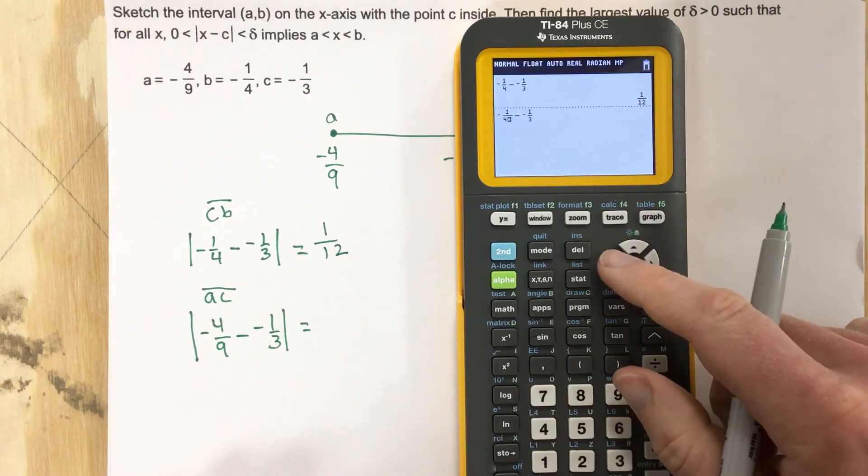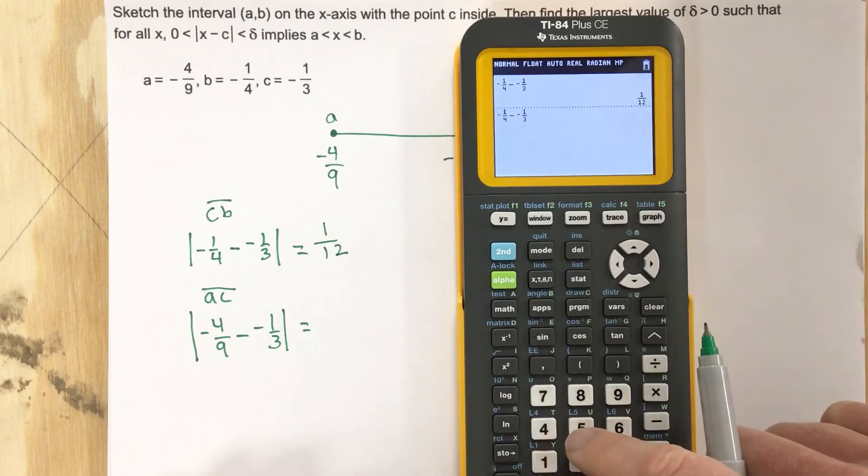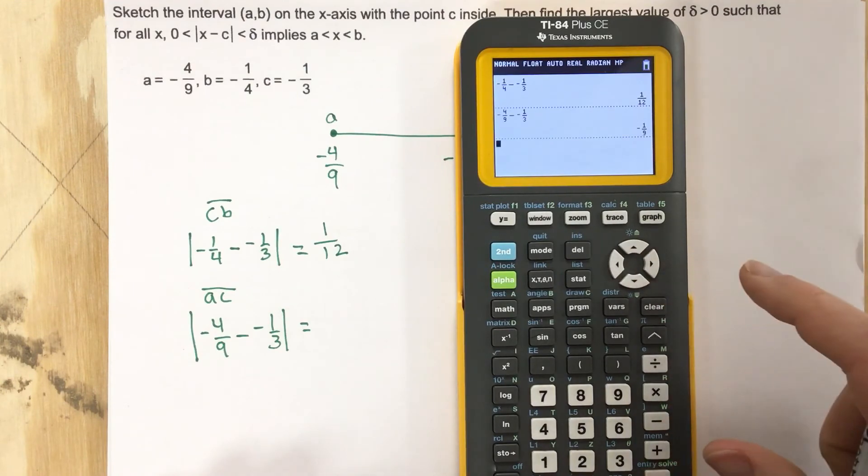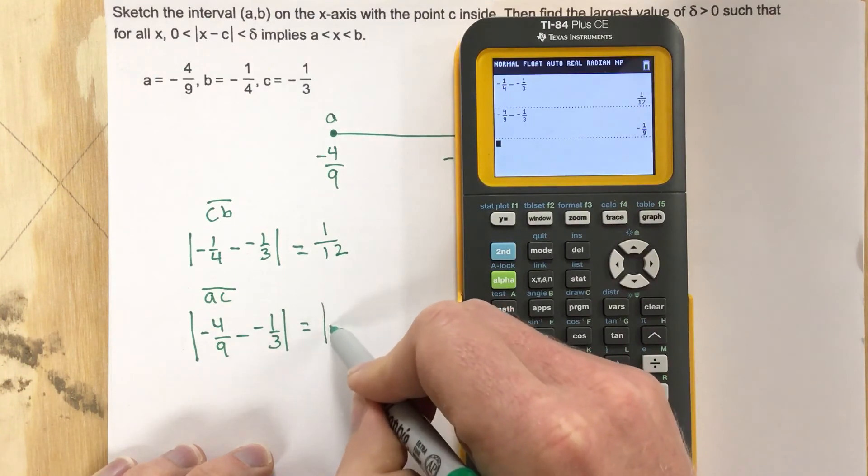I'm going to grab this again and just switch the fractions and the front part of the subtraction, so this is four ninths and now we're subtracting negative one third. Hit enter, this is negative one ninth. Remember we're taking the absolute value of negative one ninth, which is one ninth.